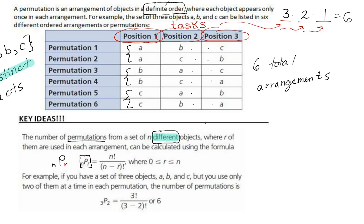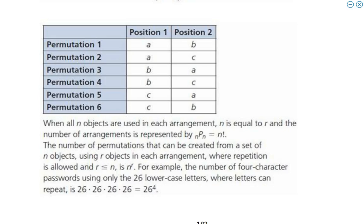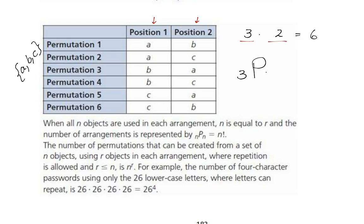Compare the top chart to the bottom chart — this one has only two positions, so just two blanks. It's still the same objects A, B, and C available. For the first blank you'd have three choices, then two. You still get six. We'd write this as 3P2, where the second number — colored red — is the positions to fill, and the first number is how many objects you have.